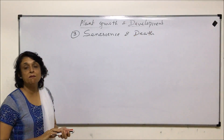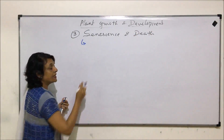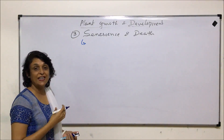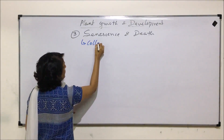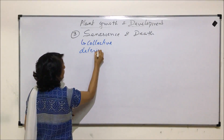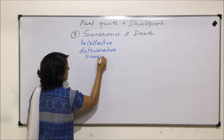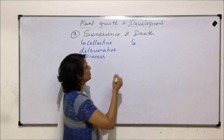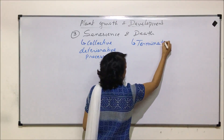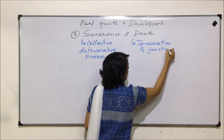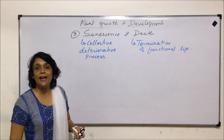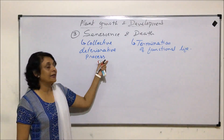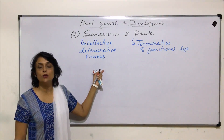What exactly do these two things mean? Senescence is a collective deteriorative process — it is the effect of all metabolic activities or all processes which are taking place, and they start deteriorating. Death is the final thing — that is the termination of functional life. This termination could be of the entire plant or it could be of a plant part.